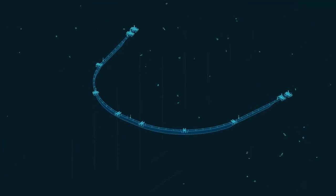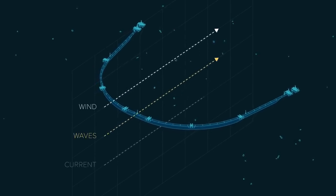Here is how the system catches plastic. The system takes advantage of three natural oceanic forces: winds, waves, and currents.